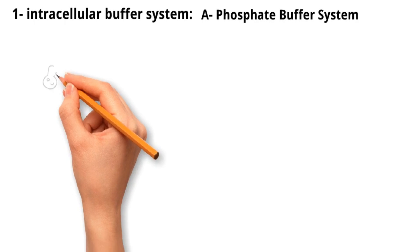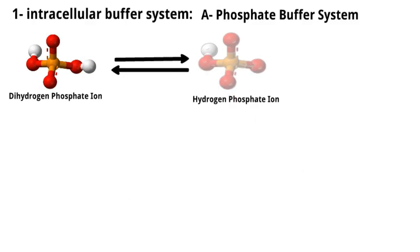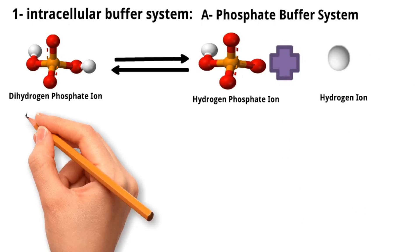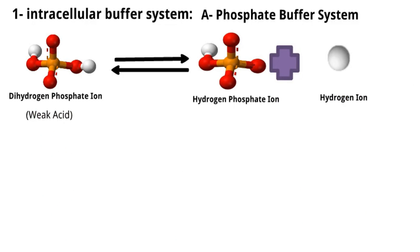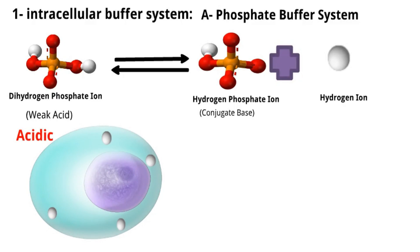This system involves the equilibrium between the dihydrogen phosphate ion and hydrogen phosphate ion. Dihydrogen phosphate is a weak acid because it can donate hydrogen ions, while the hydrogen phosphate ion, which can accept hydrogen, acts as the conjugate base. In acidic conditions, where there is an increase in the concentration of hydrogen ions, the hydrogen phosphate ion tends to accept a proton, favoring the formation of dihydrogen phosphate.